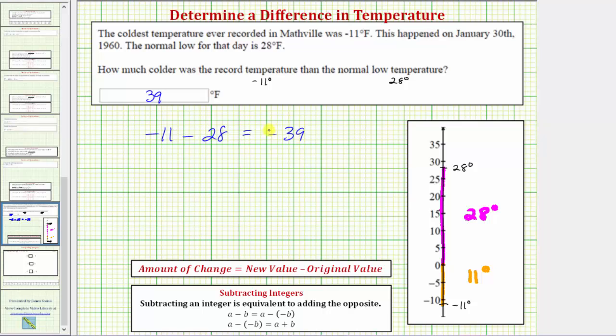And that's because it's telling us negative 11 degrees is a decrease of 39 degrees from the normal low of 28 degrees. And therefore negative 11 degrees is 39 degrees colder than the normal low of 28 degrees.